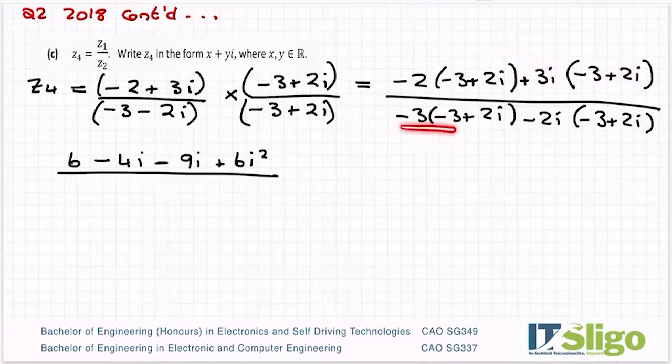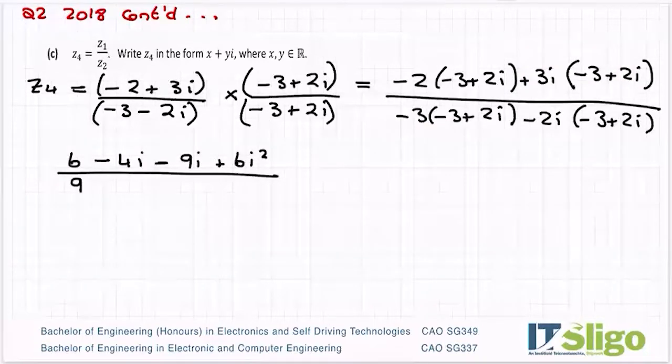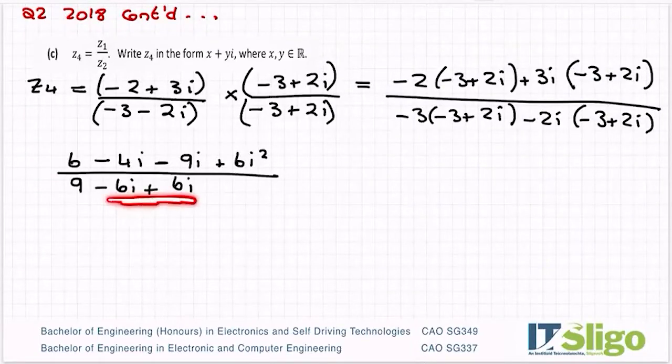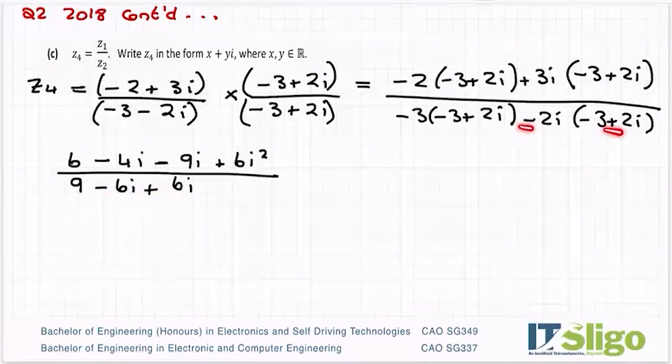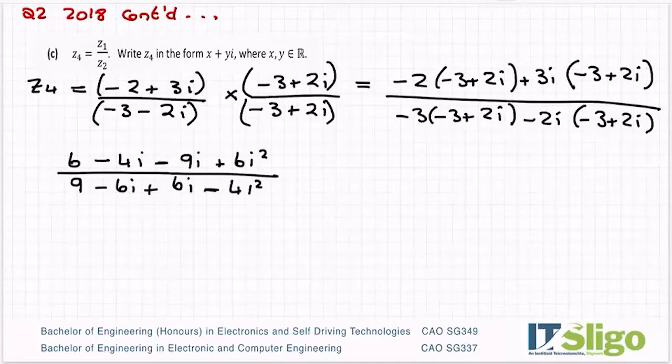So that's the top. And then on the bottom, minus 3 by minus 3 is 9. Minus 3 by plus 2i is minus 6i. Minus 2i by minus 3, minus by minus is a plus. 3 times 2 is 6i. You know you're good when you see this. Now minus by plus is a minus. 2 times 2 is 4i squared. OK. If that doesn't happen on the bottom, you've made a mistake.